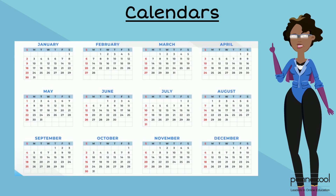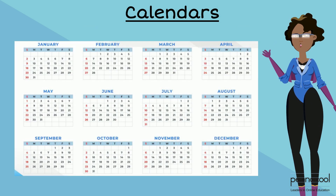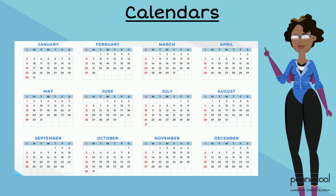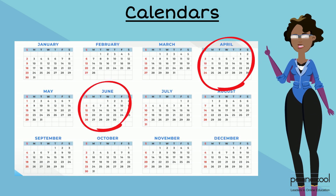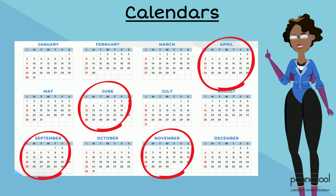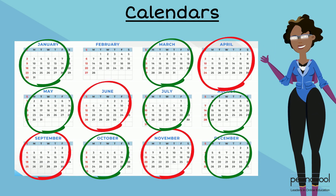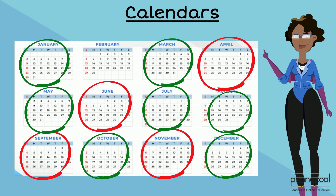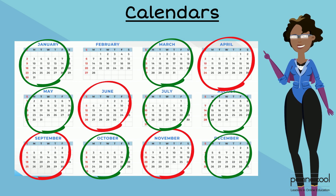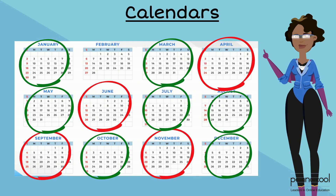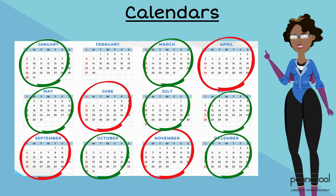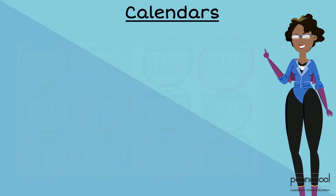Each month contains a different number of days. For example, there are 30 days in April, June and November, and 31 days in most of the other months, with the exception of February, which either has 28 or 29 days depending on if it's a leap year.